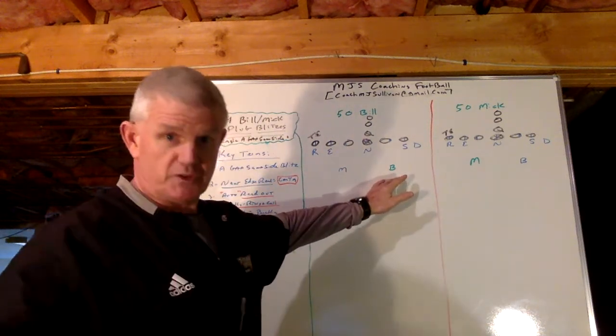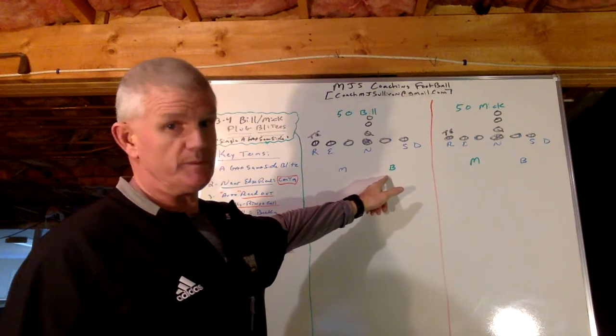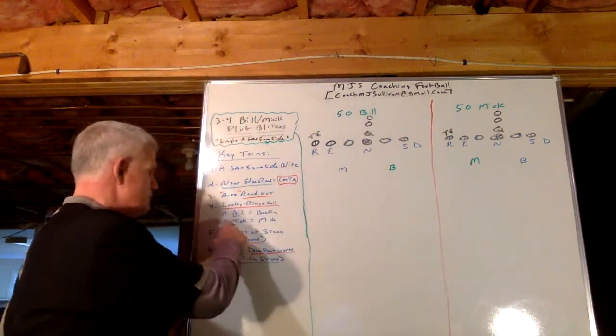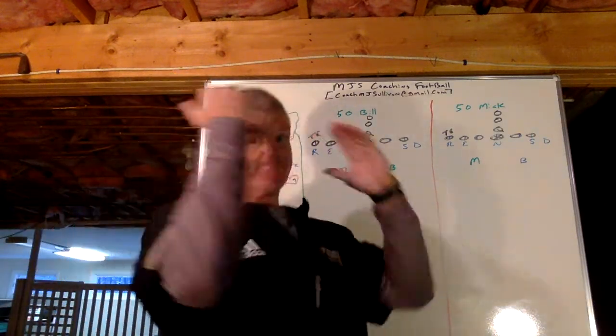Well, it comes in handy when you're coming up with codes for your blitz names. Any names, right, like Bill, Mick, et cetera, that begin with the letter B, that's the backer. Mick, M, well, any of the names that begin with the letter M, it's the Mike.